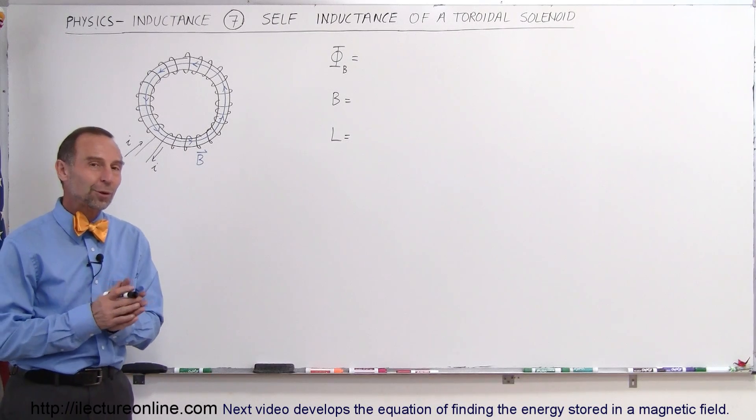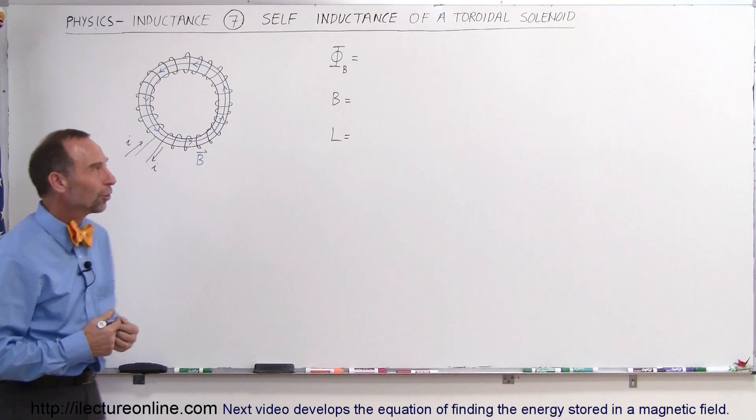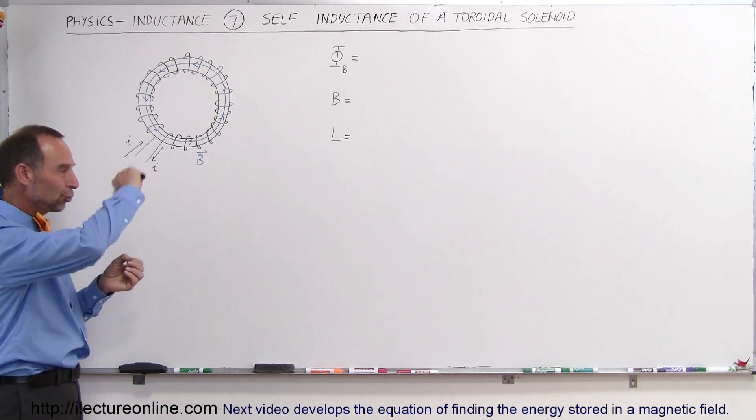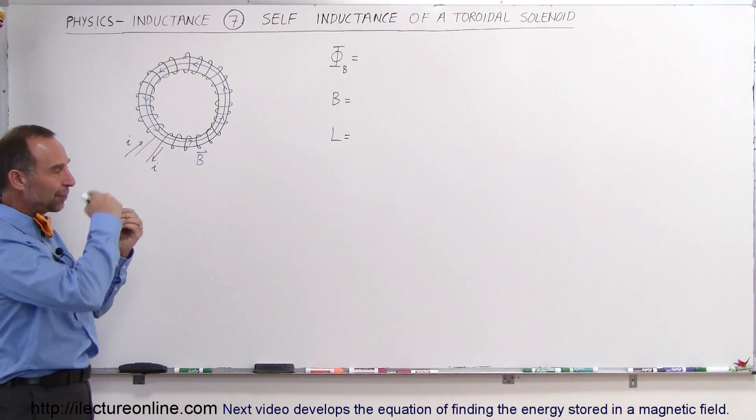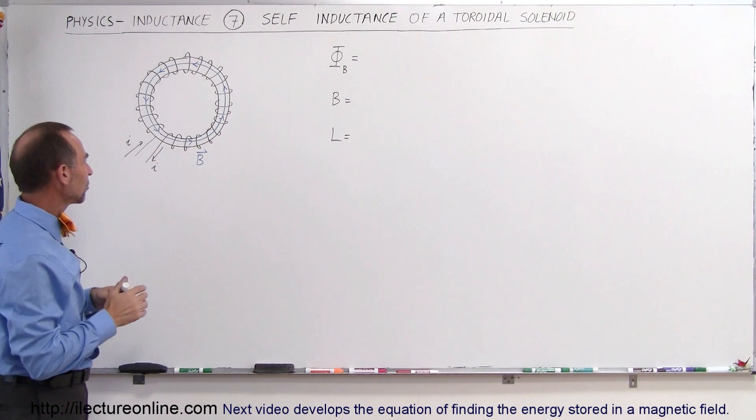Welcome to ElectronLine. In this video we're going to determine the self-inductance of a toroidal solenoid. And there it is. It's basically a tube that wraps all the way around. We have a wire coil all the way around the tube. We have current going in one direction coming out the other direction.